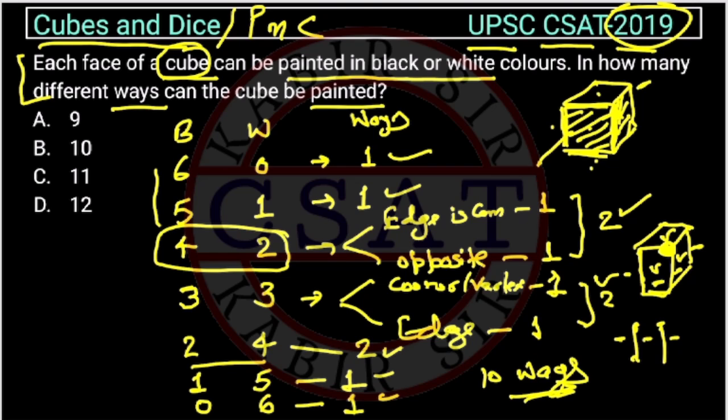So the answer is option B. This is a question from permutation and combination — a counting problem. The answer is option B: 10 ways.